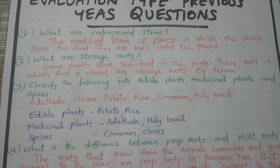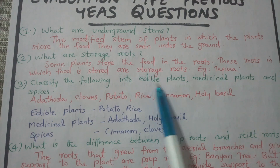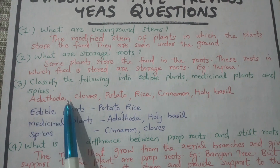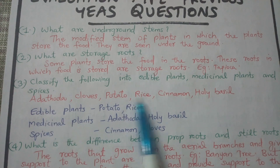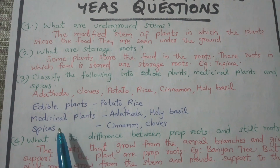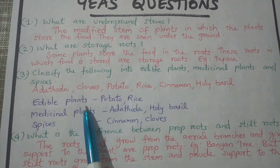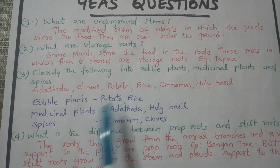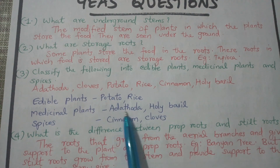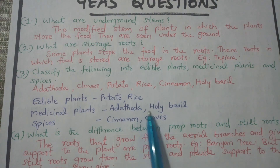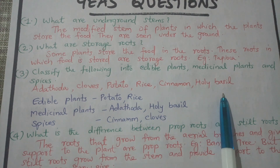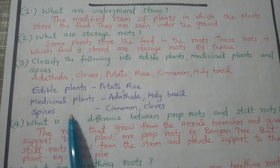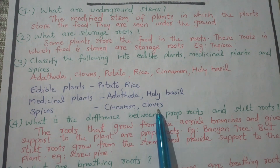Classify the following into edible plants, medicinal plants, and spices. For edible plants: potato and rice. For medicinal plants: holy basil. For spices: cinnamon and cloves.